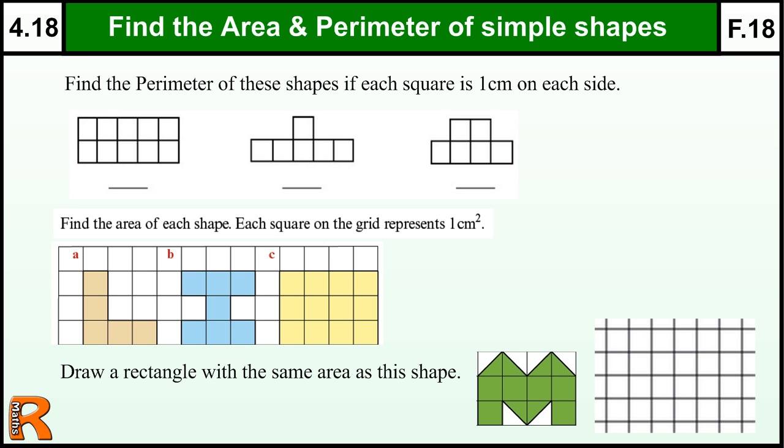Here we have area and perimeter of simple shapes. So here are some shapes. If these are 1cm on each side, so 1cm squares, what's the perimeter of these shapes?